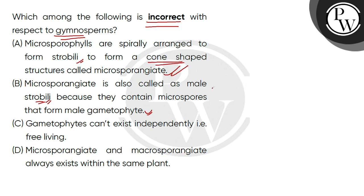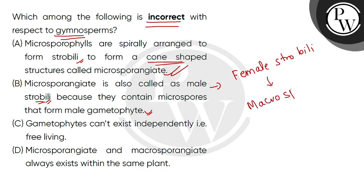Similarly, if we talk about female strobili, we call it macrosporangiate. So microsporangiate is male strobili and macrosporangiate is female strobili. This statement is correct.